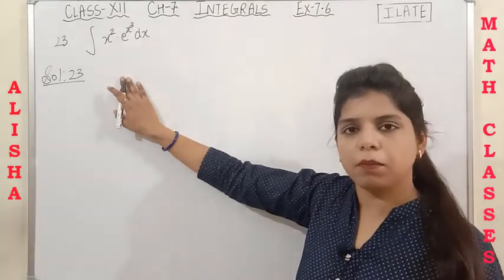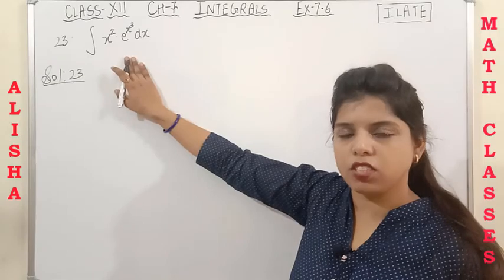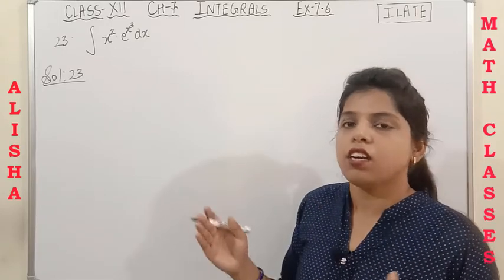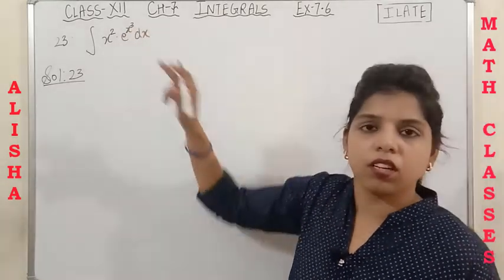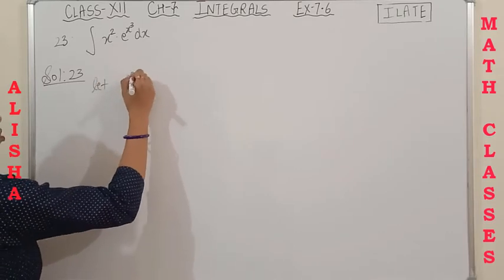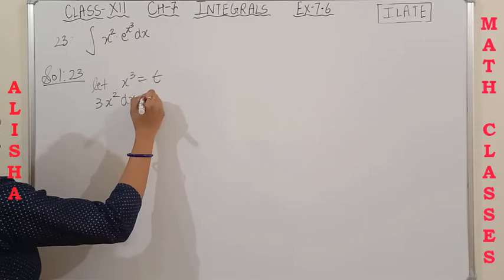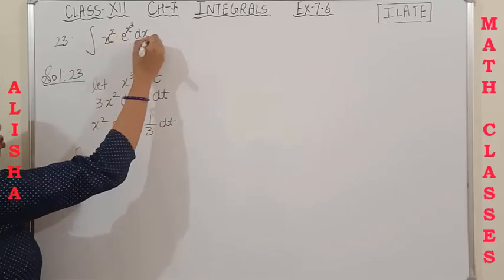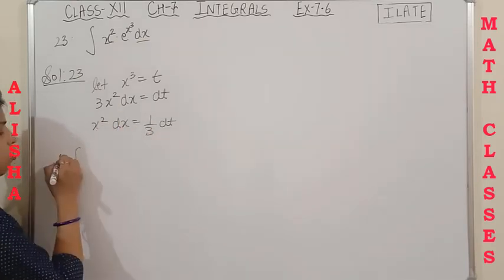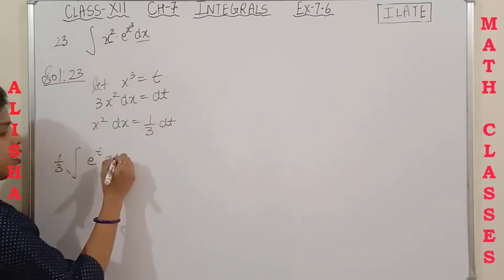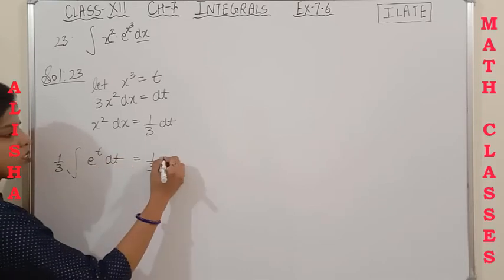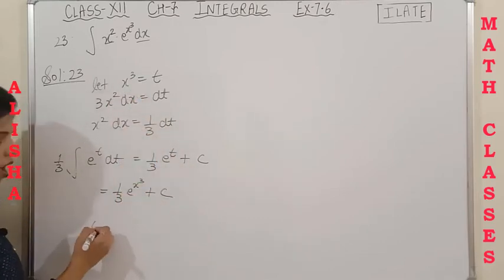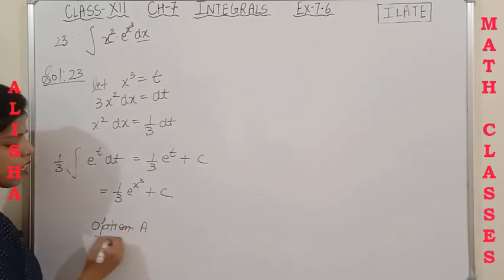Question 23 (MCQ): ∫x²·e^(x³) dx. Don't apply integration by parts here. Instead, let t = x³, so dt = 3x² dx, meaning x² dx = dt/3. The integral becomes (1/3)∫e^t dt = (1/3)e^t + C = (1/3)e^(x³) + C. The correct answer is option A.